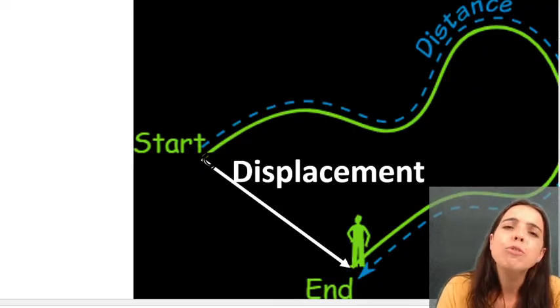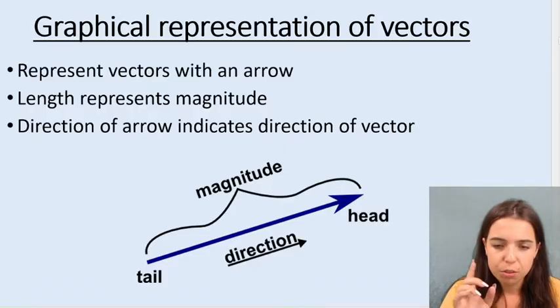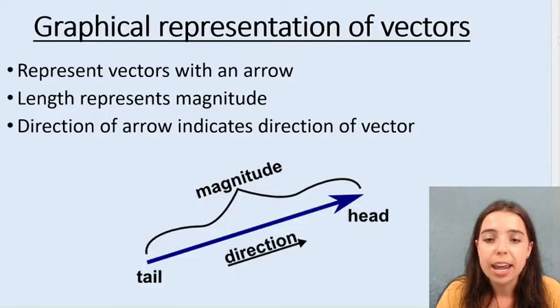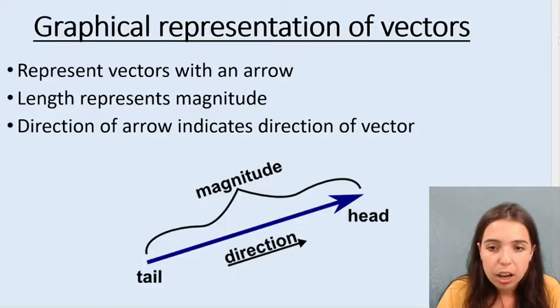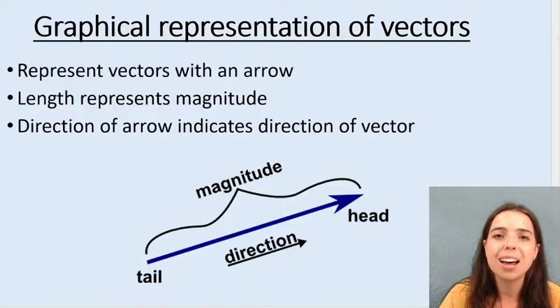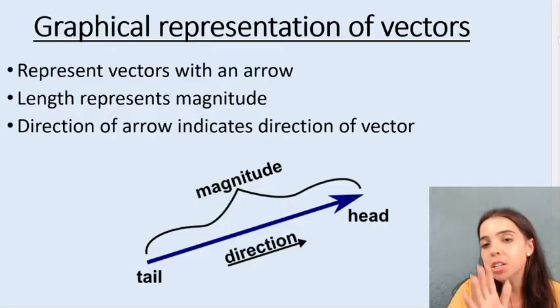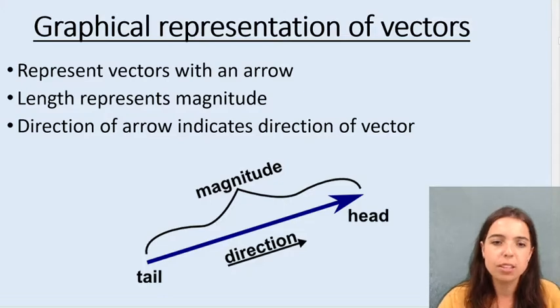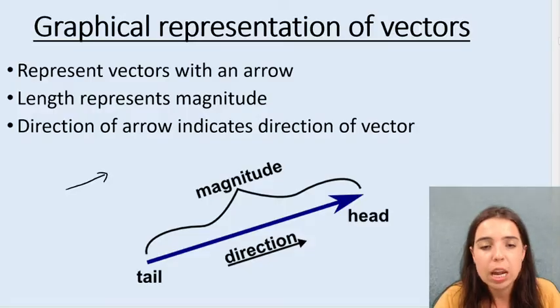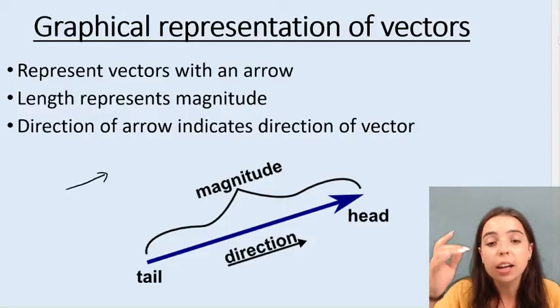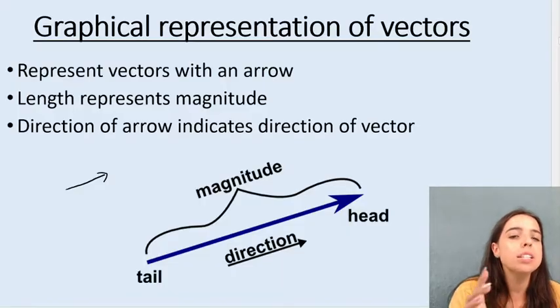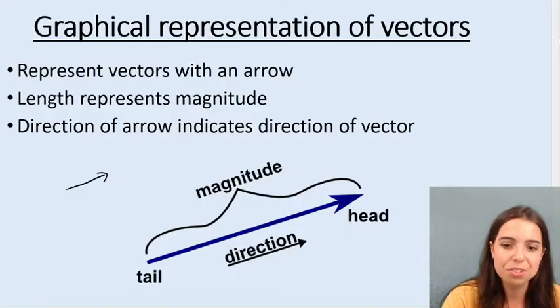That white line pointing down and to the right is your displacement. Now, how do we represent vectors? Vectors are represented by using an arrow. We've got a tail, which is this part, and we've got a head, which is this part over here. The magnitude is represented by the size of the arrow, and the direction is the direction in which the arrowhead points. So if I had to draw a vector next to it like this, we could say that the smaller vector has a smaller magnitude than the blue one, because it's smaller, but it's pointing in the same direction. There are still different vectors.